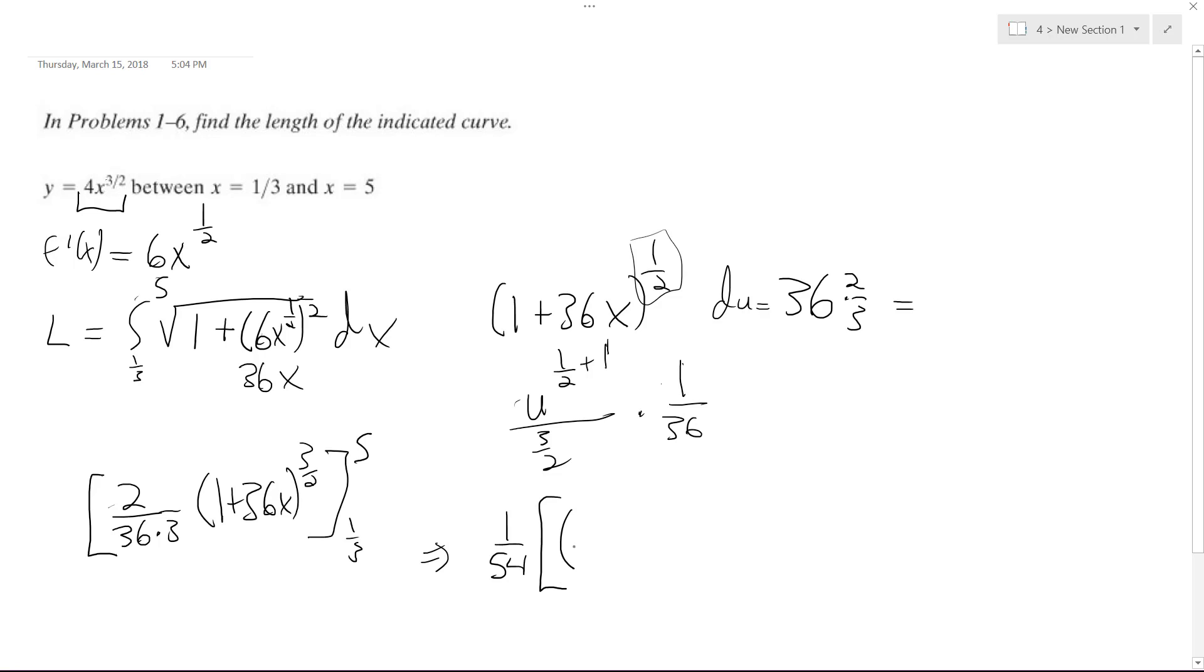Times 5, we end up with 181 minus 1/3, so 1/3 of 36 is going to be 12 plus 1, which is going to be equal to 13, and I should mention these are all raised to the 3/2.